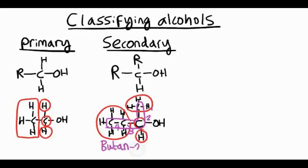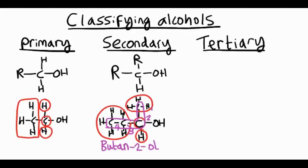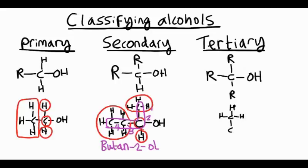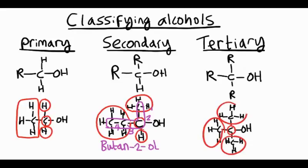Let's have a look at tertiary alcohols. The carbon that has the OH group will have three alkyl groups, or three R groups, attached to it — that's what makes it a tertiary alcohol. It doesn't matter what R groups we use; they could be methyl, ethyl, or propyl groups. In this case, we'll put three methyl groups attached to that central carbon with the OH group. What we have here is a chain with three carbons, the OH group on the middle carbon, and a methyl group — so it would actually be 2-methylpropan-2-ol.